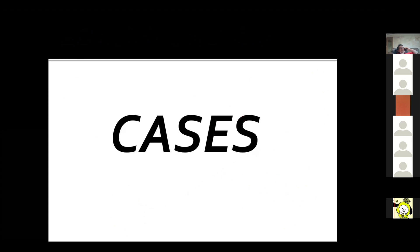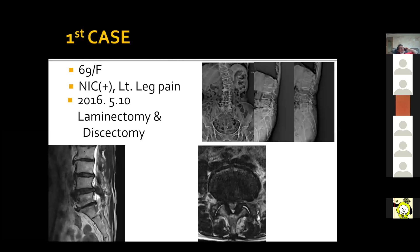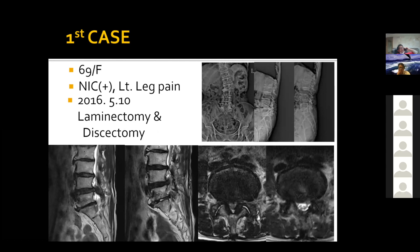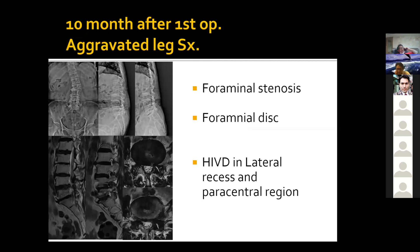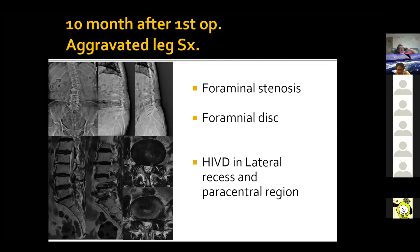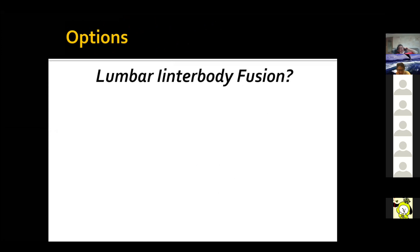Let's look into the surgical strategy to select ideal endoscopic approaches by reviewing the following cases. The first case is a 69-year-old woman with left-sided leg pain. Radiology showed L4-5 stenosis. Ten months after the first surgery she returned with aggravating ipsilateral leg symptoms. You could see a slightly decreased disc height, narrow foramen, combined foraminal disc herniation, and also a lateral recess disc herniation. The pathologic targets — the birds we should catch — are foraminal stenosis, foraminal disc herniation, and lateral recess disc herniation. The conventional surgical method would be lumbar interbody fusion.